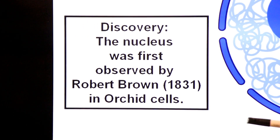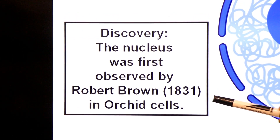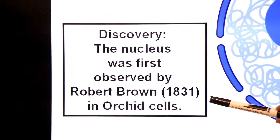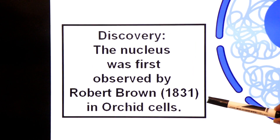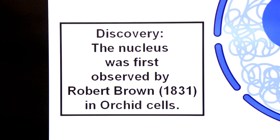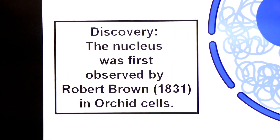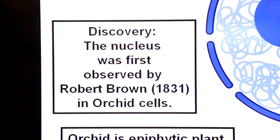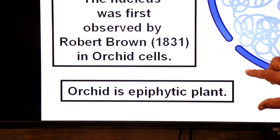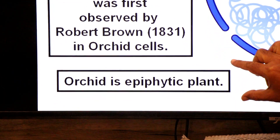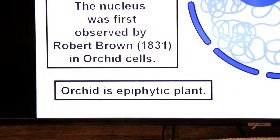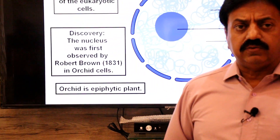Who discovered the nucleus? The nucleus was first observed by Robert Brown in the year 1831 in orchid cells. Orchid is an epiphytic plant.